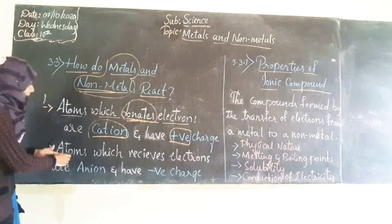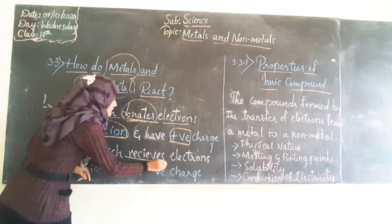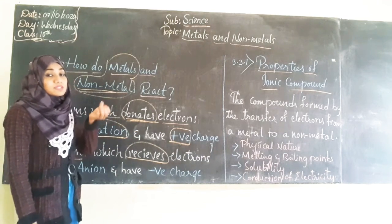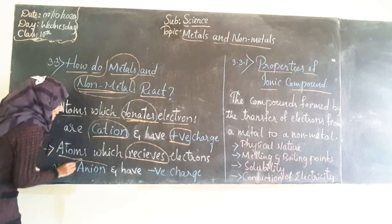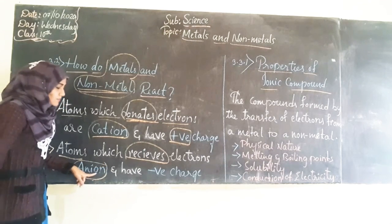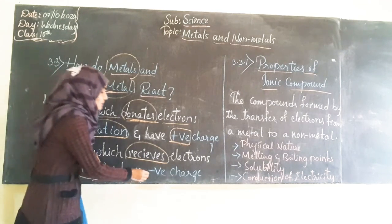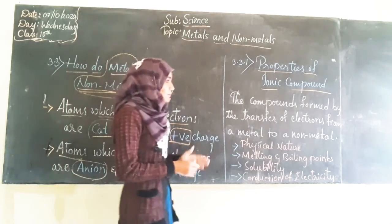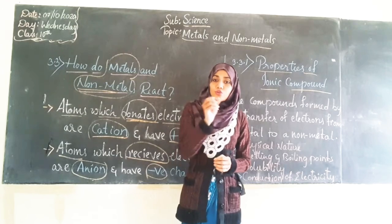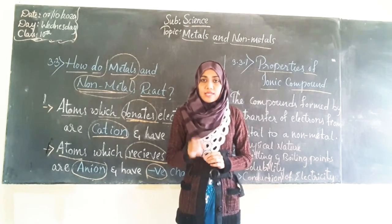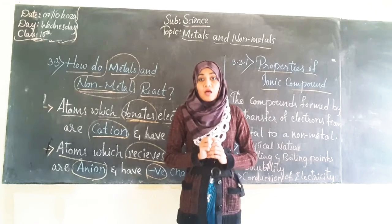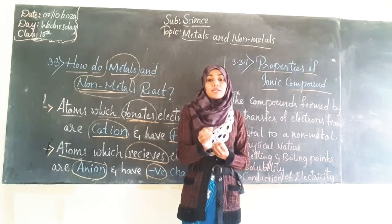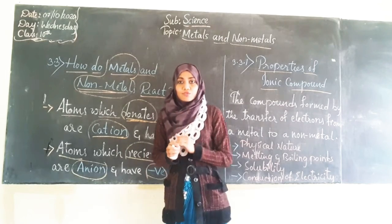Likewise, atoms of the elements which receive electrons are called anions, and those elements will be having a negative charge on them. Simply put: if the element donates electrons, it will be called a cation and it will have a positive charge; whereas if the element receives electrons, it will be considered an anion and it will have a negative charge.